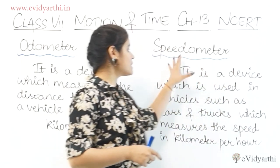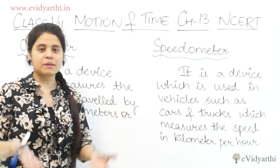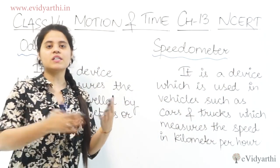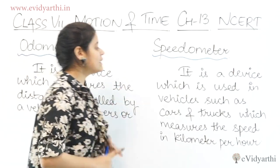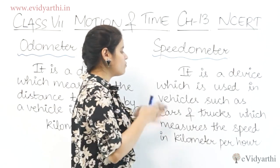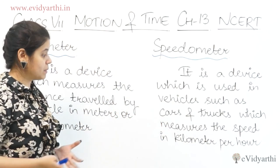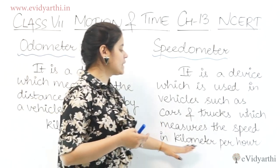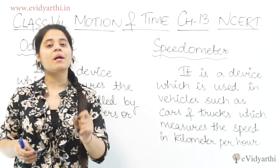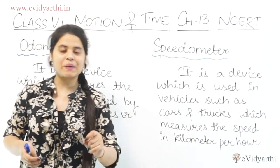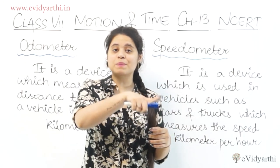Next, we have the speedometer. The speedometer is a device used in vehicles such as cars and trucks, which measures the speed in kilometers per hour. Kilometers per hour is the unit of speed shown on the speedometer.